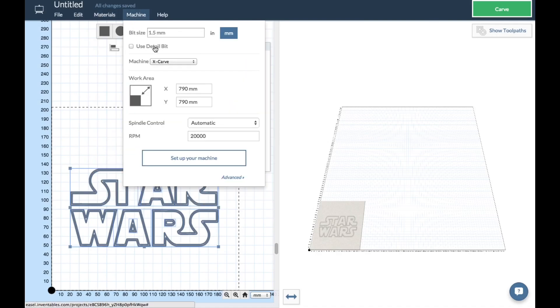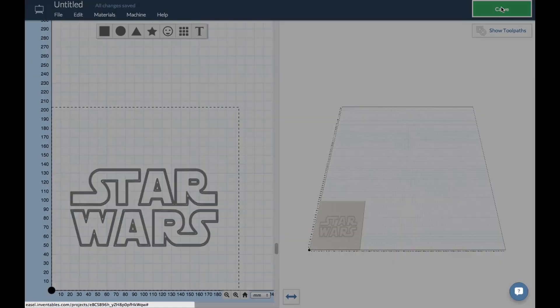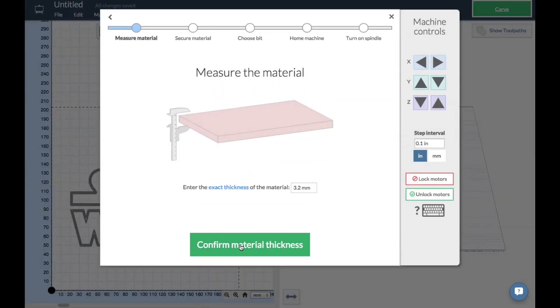The next step was to click on the machine and set my bit size, and I actually measured this with the calipers. It was 1.5 millimeters where it was cutting. This was a very fine bit and from there I just clicked on the Carve button and went through the steps through the menu.